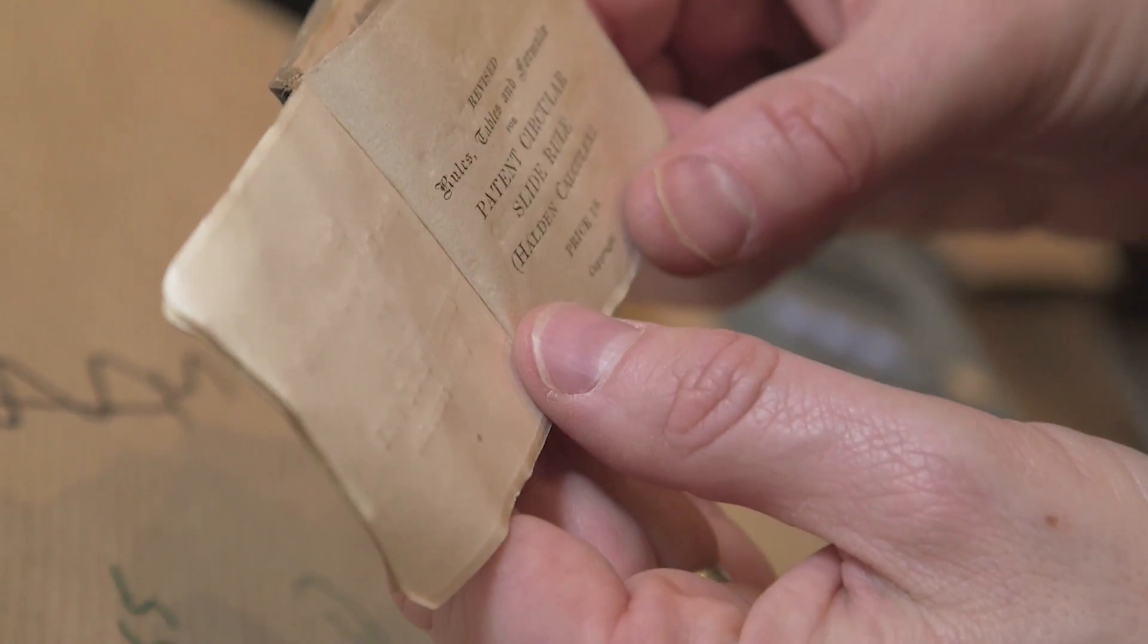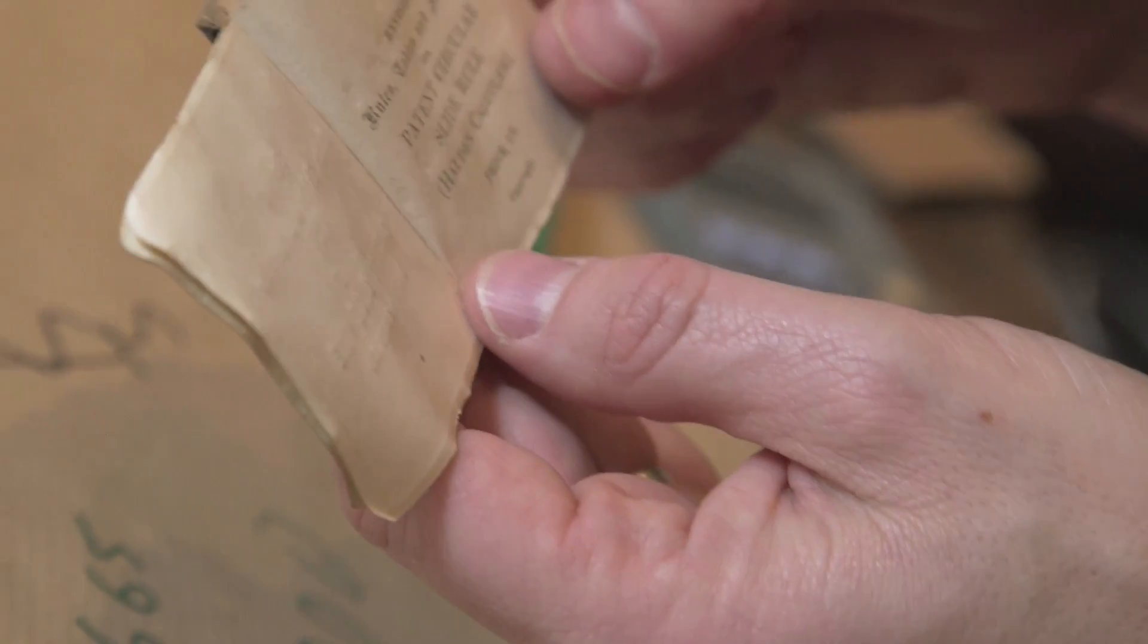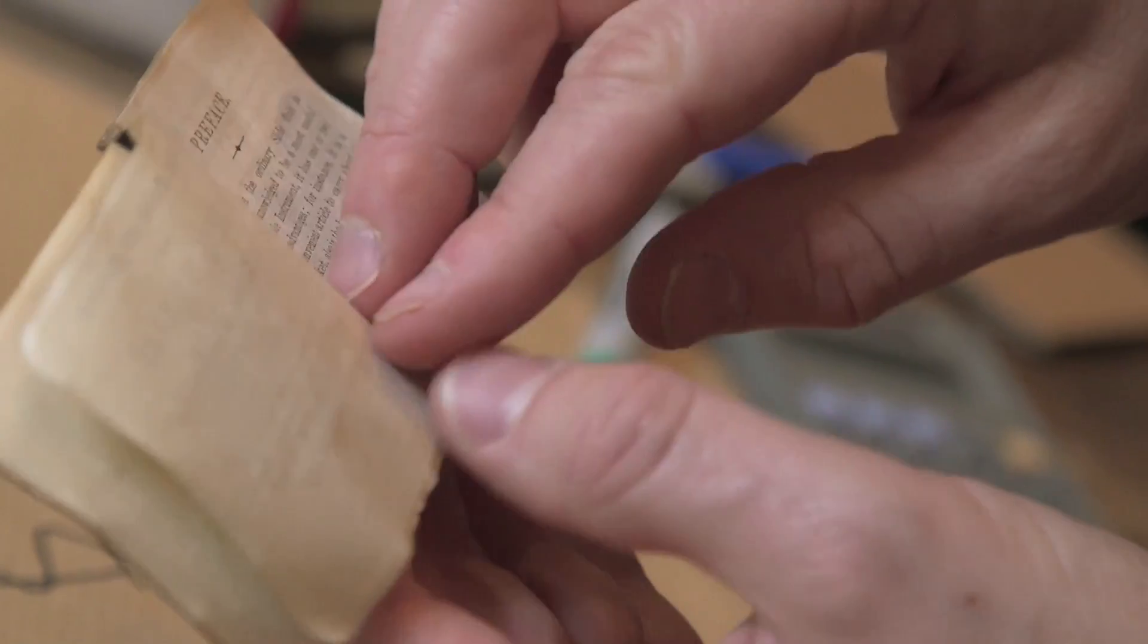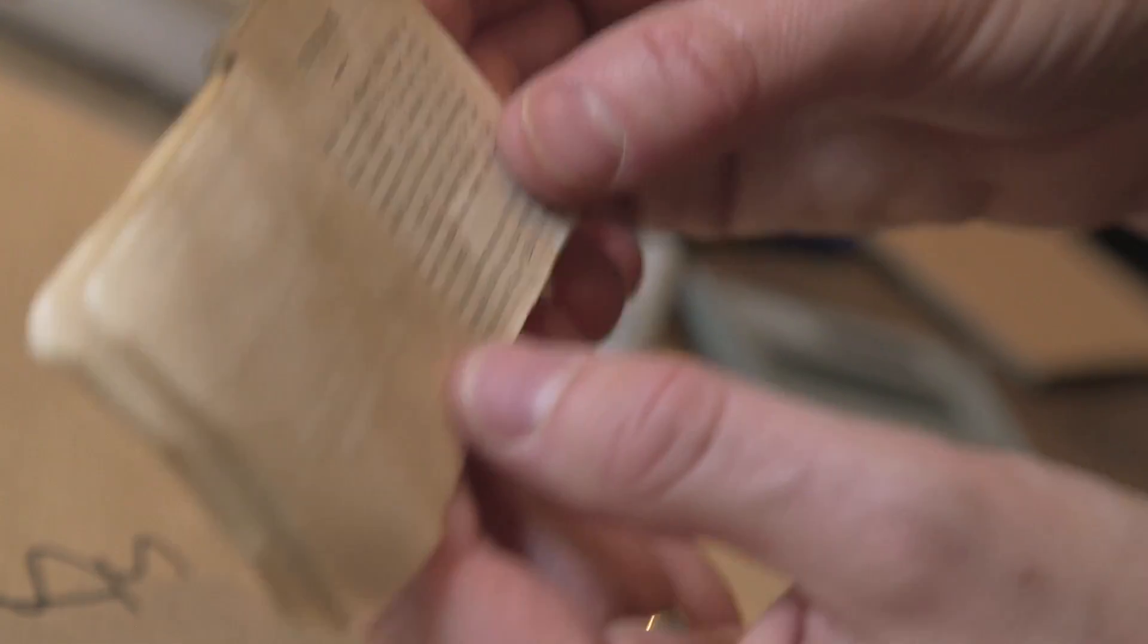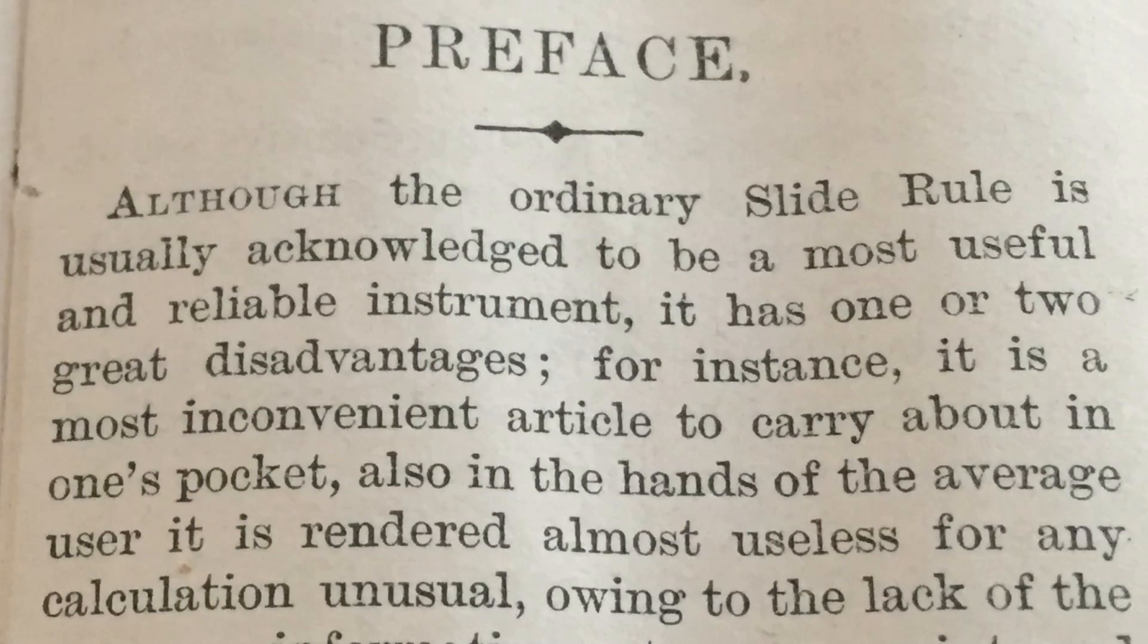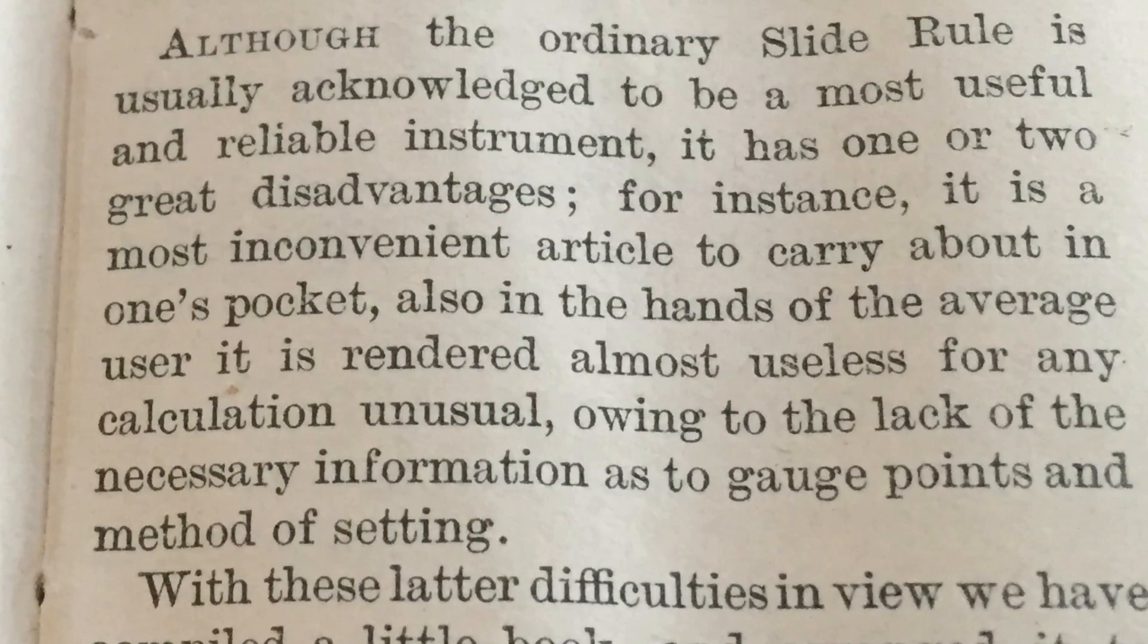Price one over six, that's a penny, is it? I don't know, I'm too young, even though I'm old, to understand old English things. I'm going to read you a story. Although the ordinary slide rule is usually acknowledged to be a most useful and reliable instrument, it has one or two great disadvantages. For instance, it is a most inconvenient article to carry about in one's pocket. Also in the hands of the average user, it is rendered almost useless for any unusual calculation.